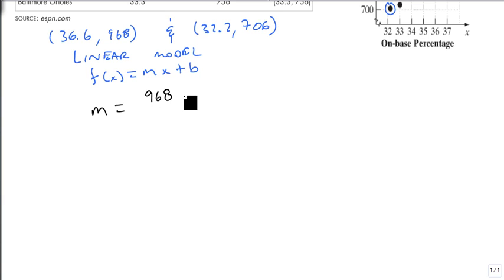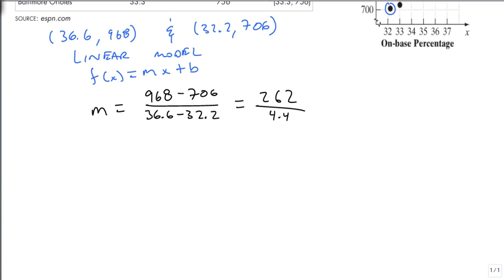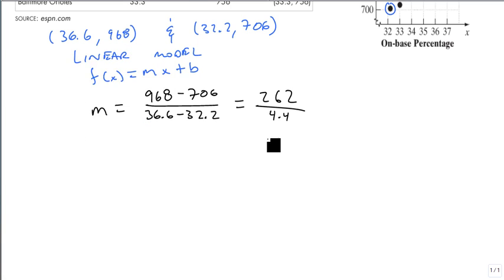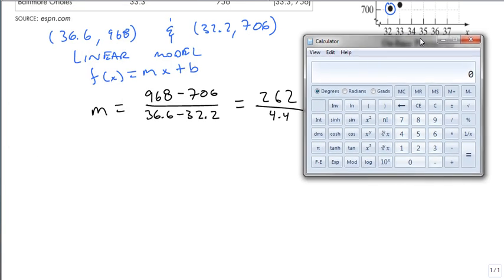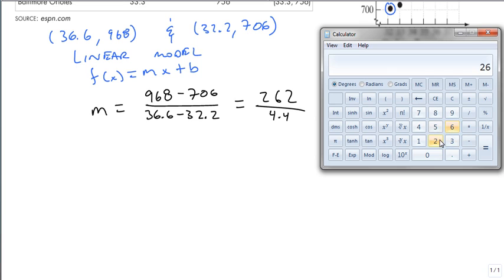We get 968 minus 706 divided by 36.6 minus 32.2. A little ahead of myself there. So 968 minus 706 is 262. On the bottom we have 36.6, 32.2 from that is 4.4. So we're going to grab our calculator. We're going to take 262 divide it by 4.4.